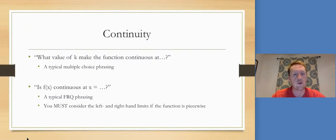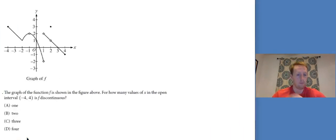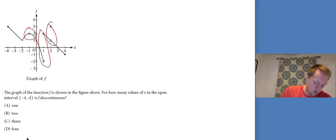Let's look at continuity ideas. The two most common questions are: what value of k makes the function continuous at something, and is f of x continuous at x equals something. On that second one, you have to consider the left and right hand limits if it's a piecewise function. You can't just say the limit is this, you have to consider both sides. The graph shows a hole here, a jump here, and a removable here. That's three points of discontinuity. The cusp is only a place where it's not differentiable, but it's still continuous.